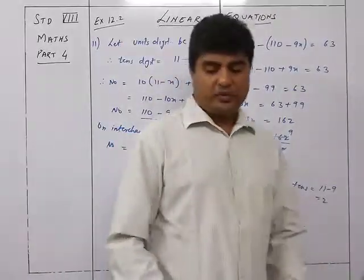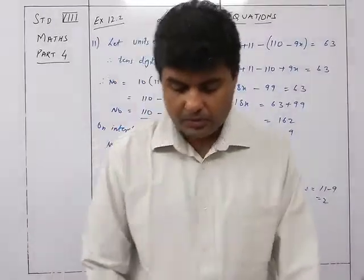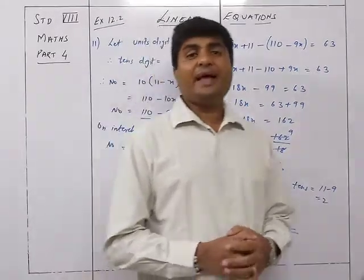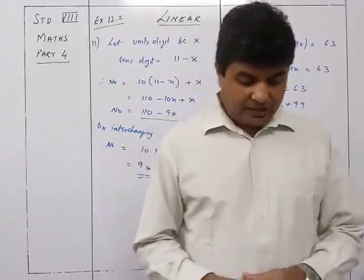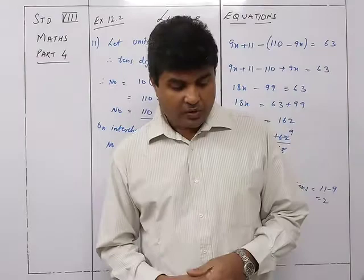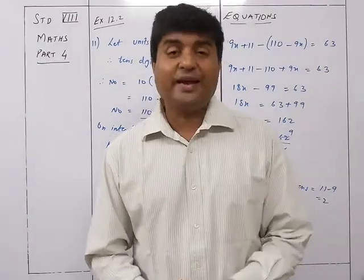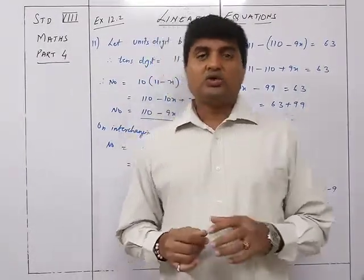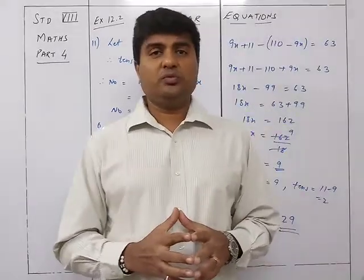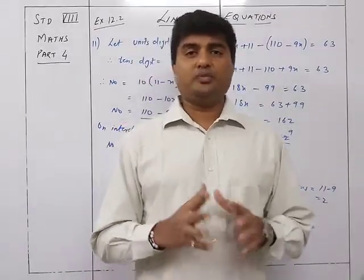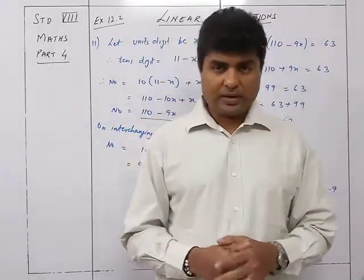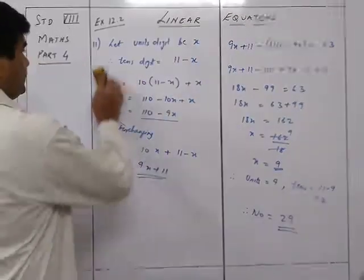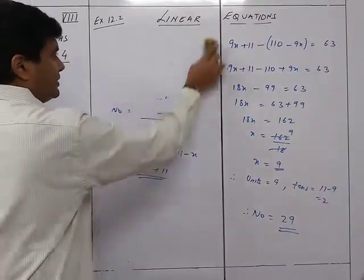Those were two sums based on two-digit numbers. The next three questions are based on age. Whenever a sum is based on age, we will always make two columns — present age and future or past age — and see how to approach it. We are now on sum number 12.